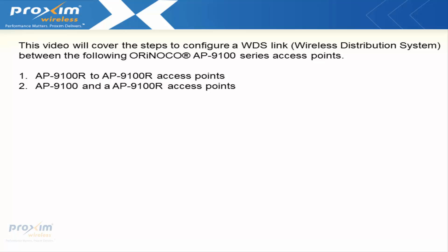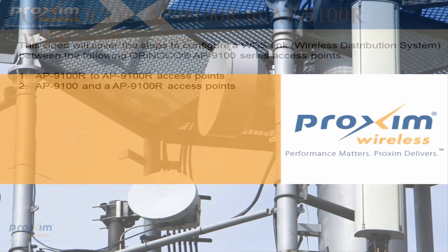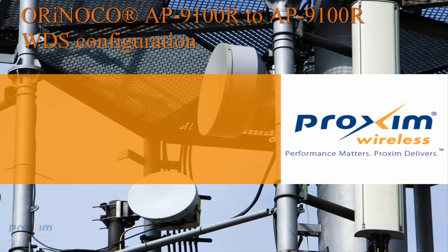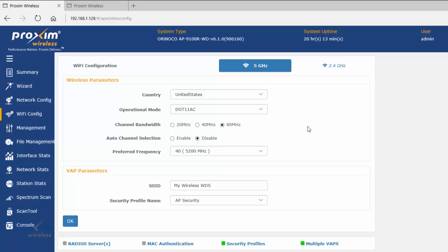In this video we'll cover the steps to configure a WDS link — a wireless distribution — between the following Orinoco AP9100 series access points. We could do this between two AP9100R access points and between an AP9100 and an AP9100R access point as well. Let's go ahead and cover the steps on setting up a WDS wireless bridge between two AP9100R ruggedized units.